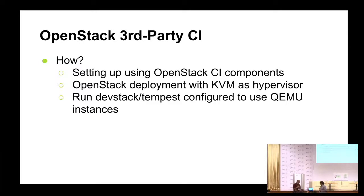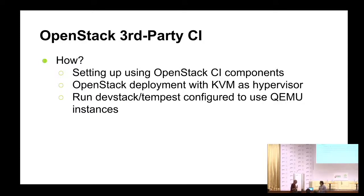So, how are we going to do this? First of all, we're going to use pre-existing OpenStack CI components and try as much as possible to limit any custom work we have to do. They've already got a lot of components that work properly on x86, they've been very heavily tested, and we want to leverage that as much as we can. Part of setting up that test infrastructure requires setting up an OpenStack deployment, and we're going to use that with a KVM hypervisor. At some point, maybe we can get to using Xen hypervisor as well, but we're starting out with KVM. It will run the DevStack and Tempest suite configured to use QEMU instances.